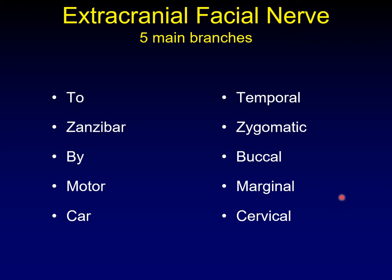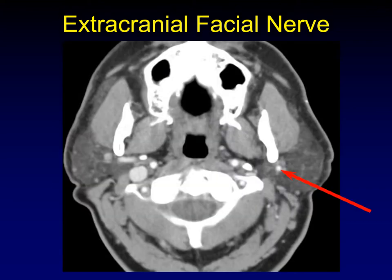So temporal, zygomatic, buccal, marginal, and cervical are the five branches of the facial nerve arrayed in a sagittal plane within the parotid gland. There's a problem with imaging of the extracranial facial nerve: we can't see it. So we use a radiologic marker to approximate the location of the facial nerve trunk as it traverses the parotid gland — that marker is the retromandibular vein. Finding the retromandibular vein tells us approximately where the facial nerve is, and it also serves as the dividing line between the superficial and deep lobes of the parotid.